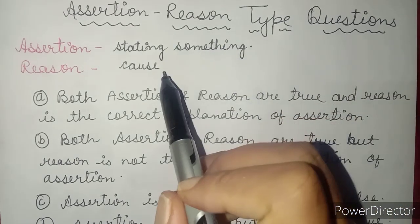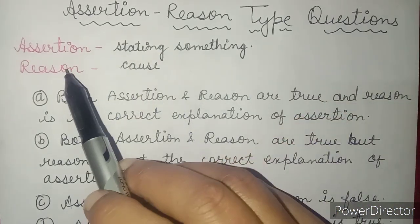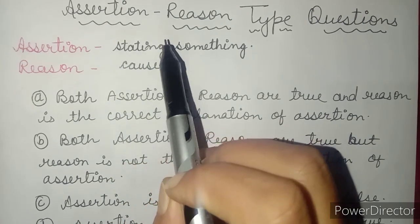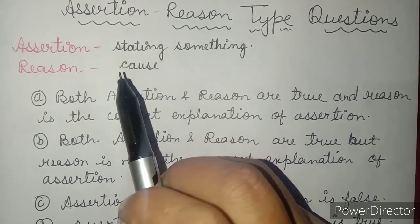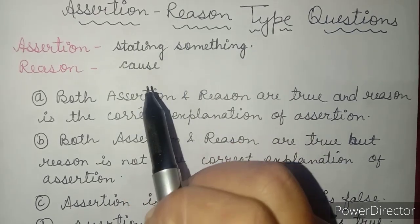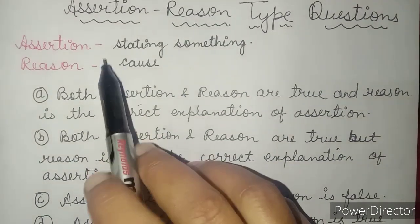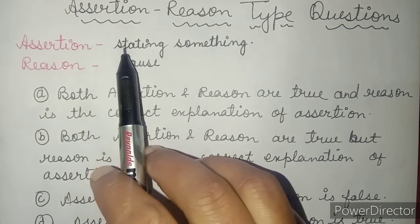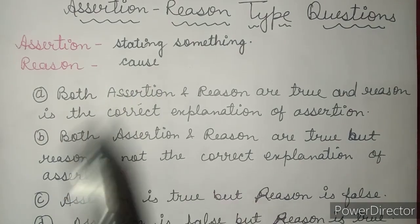For example, assertion: graphite is a very good conductor of electricity. And the reason is the cause. What is the reason? The reason is that graphite contains free electrons and ions which help in the conduction of electricity. So assertion means stating something, and reason means cause.